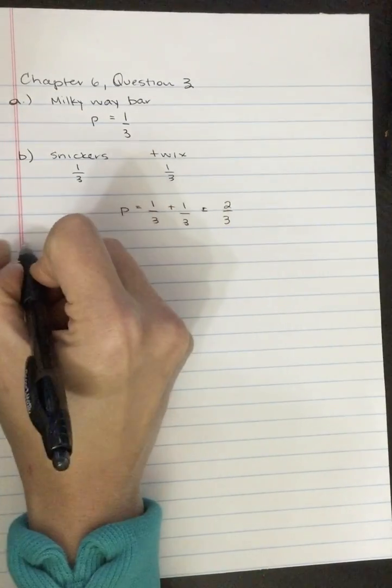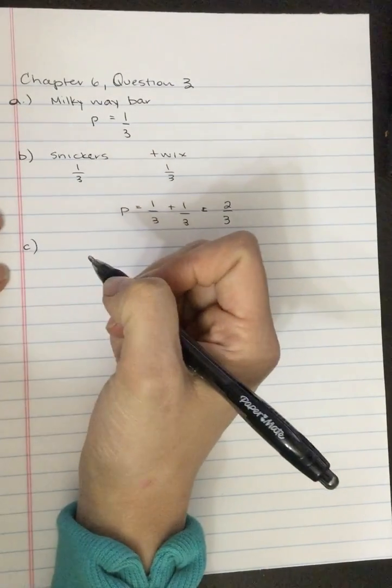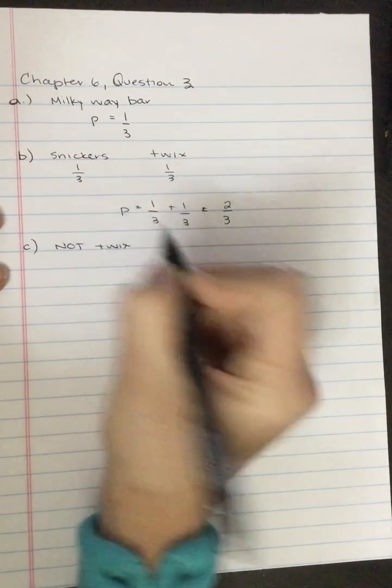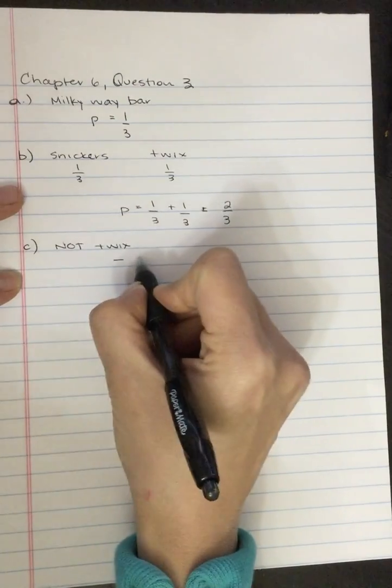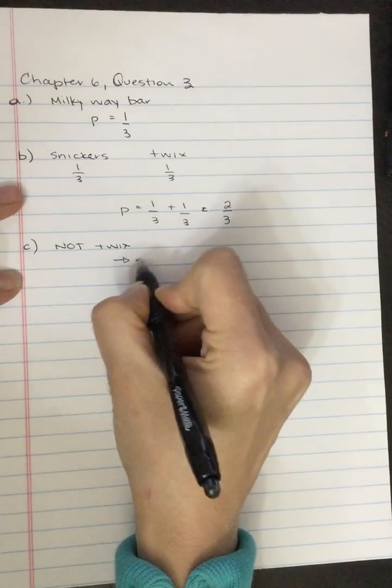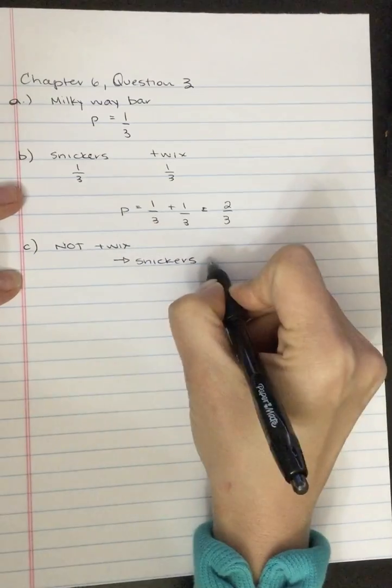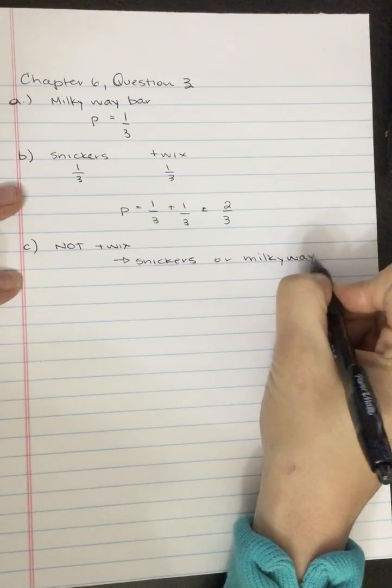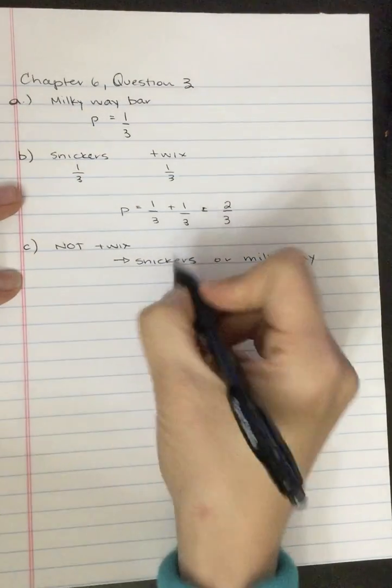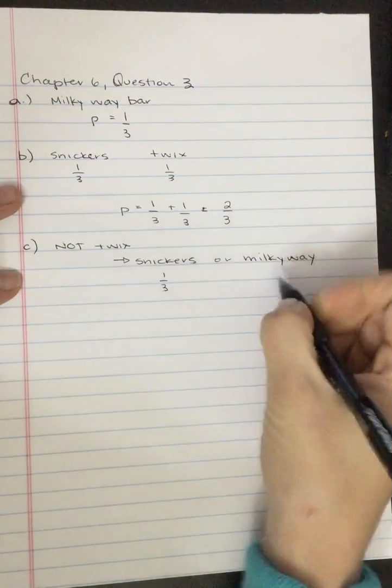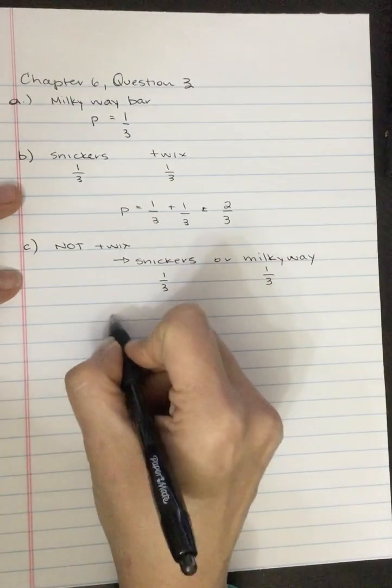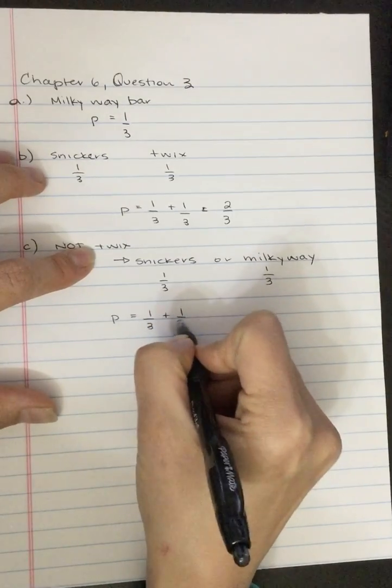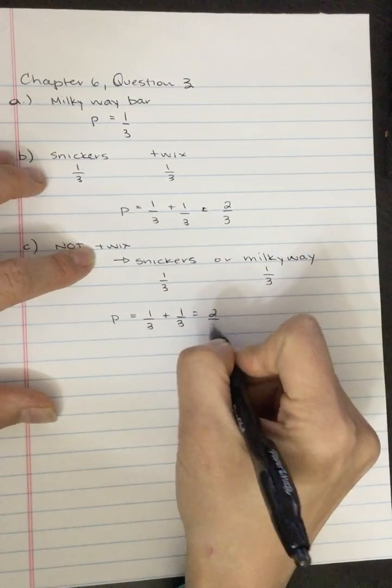And then C. What is the probability of something not Twix? And so if it's not Twix, that means it's either Snickers or a Milky Way. And so the probability of a Snickers is one out of three, Milky Way is one out of three, so the probability of not getting a Twix is equal to one out of three plus one out of three, which is two out of three.